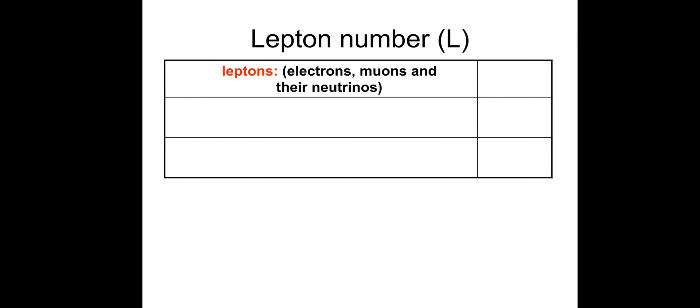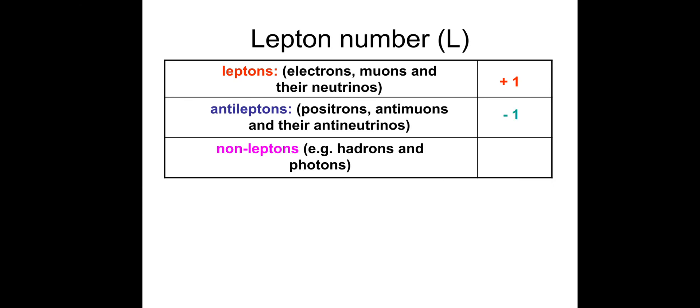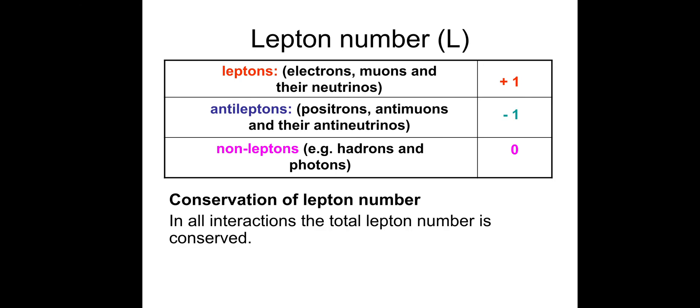The lepton number. I'm aware it's a lot of information at once. Leptons like electrons, muons, and the associated neutrinos have a lepton number of plus one. Anti-leptons like positrons, anti-muons, and anti-neutrinos have a lepton number of minus one. Non-leptons like hadrons, photons, and mesons have a lepton number of zero. In all interactions, the total lepton number is conserved. Lepton numbers are usually given in a test.